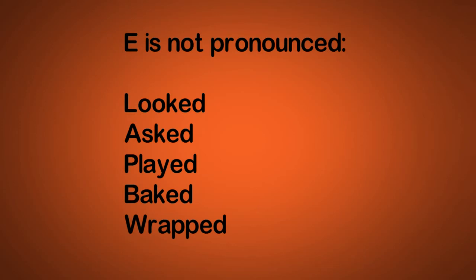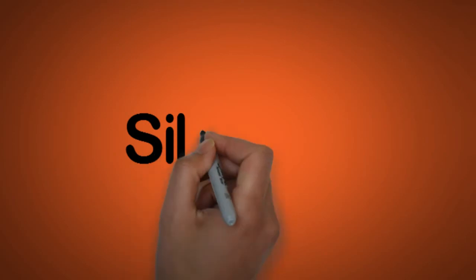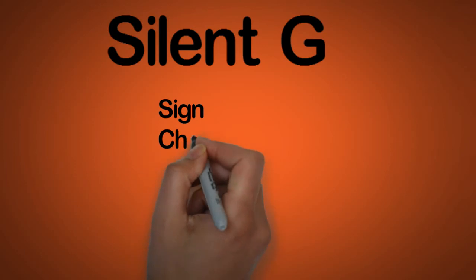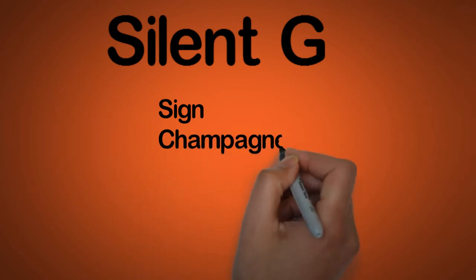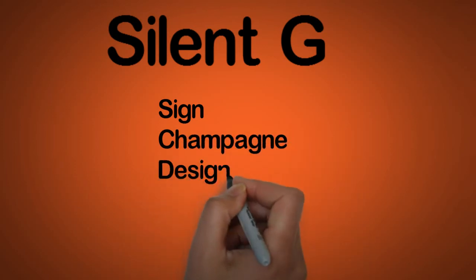So, a G can also be silent too. Think about the words sign, champagne, design, or foreign. All of these examples have a silent G.